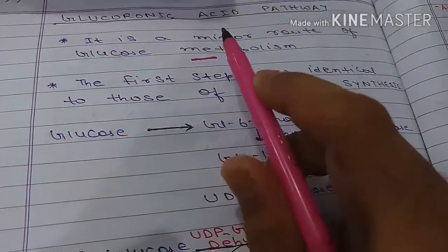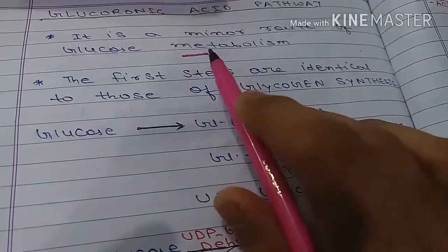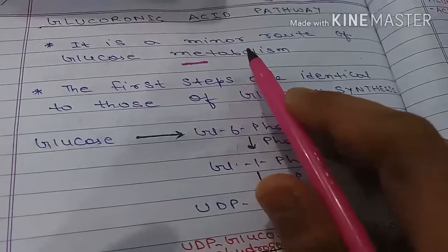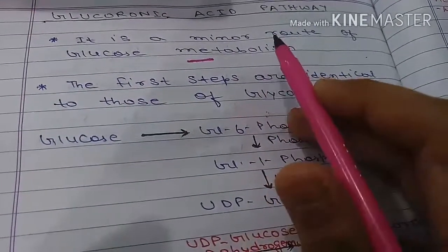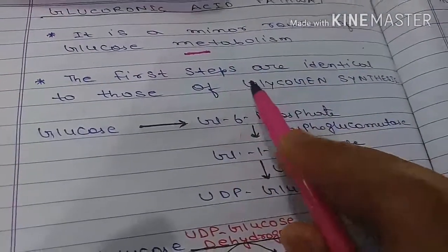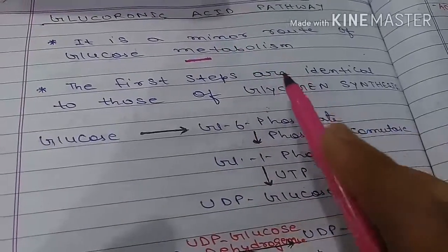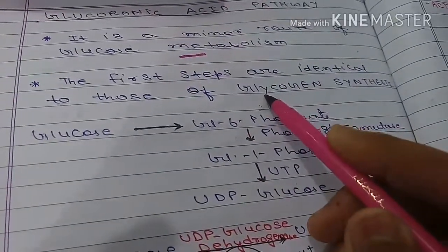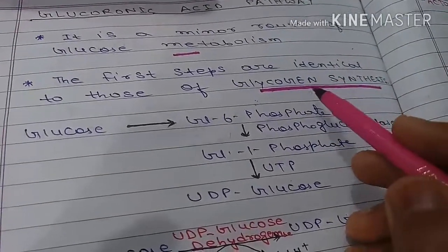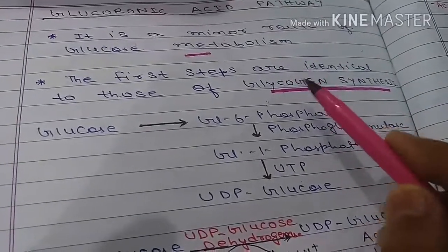Hello friends, today we are going to discuss the glucuronic acid pathway. First, the basic things: it is a minor route for glucose metabolism. The major routes for glucose metabolism are glycolysis and the pentose phosphate pathway. The initial steps in the glucuronic acid pathway are identical to those of glycogen synthesis.